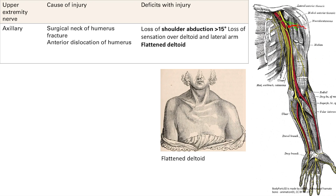The other thing that can happen is an anterior dislocation of the humerus — basically a shoulder dislocation. The deficits you'll see: the key word here is the deltoid, because that's the muscle the axillary nerve innervates. Deltoid function is shoulder abduction, which is raising the arm above 15 degrees. The first 15 degrees involves the supraspinatus muscle; after that, it's the deltoid. You're also going to get loss of sensation over the deltoid and the lateral arm.